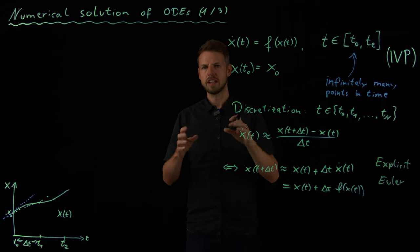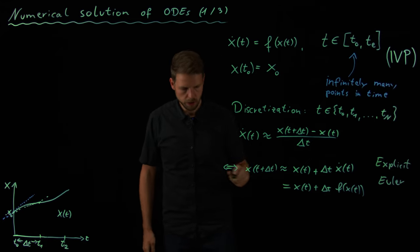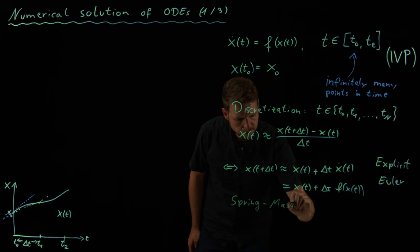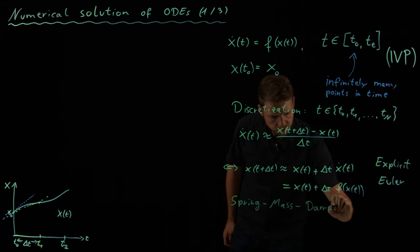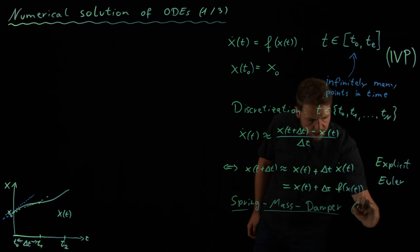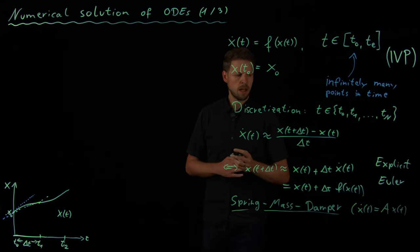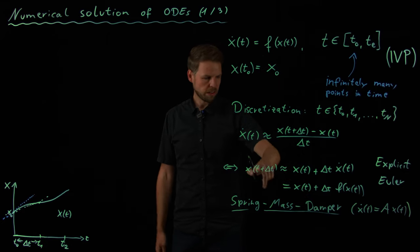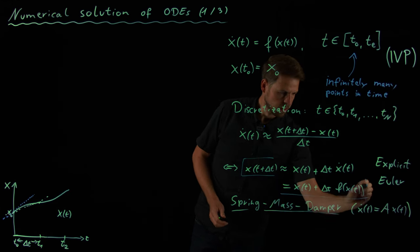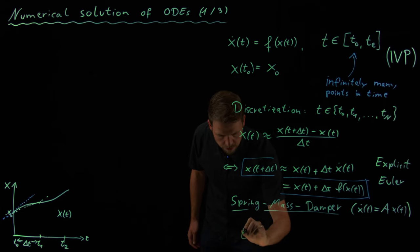What I'm going to do now for the rest of the video is consider the example of the mass spring damper system and I'm going to show you a little bit of code how this looks in the simulation. So if you consider the spring mass damper system, then we have seen the right hand side was of the form x dot equals a times x of t. It's a linear system. So what we can do is we can simply use this rule that I have derived here. This is the explicit Euler rule. I can use this to solve the spring mass damper system numerically.